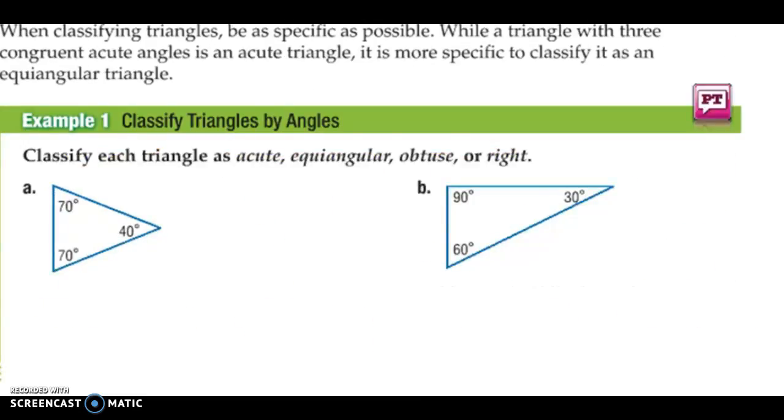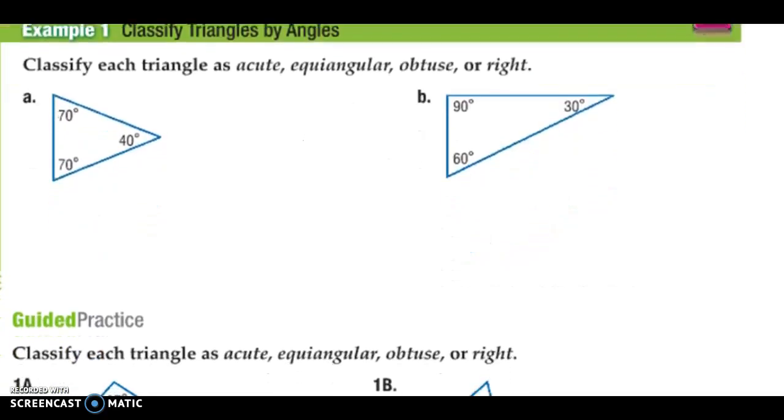If we're going to look at example 1 right here, the first thing we see in this one is a 70 degree angle, a 70 degree angle, and a 40 degree angle. Notice all of those angles are less than 90 degrees, thus making this an acute triangle.